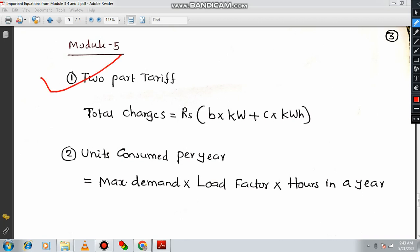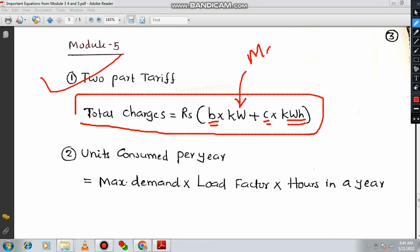Two part tariff comprises of the fixed charge as well as the running charge. Here the total tariff has been segmented into two. One is fixed part, another one is running charge. Total charge can be computed using the formula: Rupees, in terms of rupees only, whatever the currency it may be based on the country. Rupees B into KW. B means the cost per kilowatts. And C into kilowatt hour. This is actually called maximum demand. Maximum demand, which will be expressed in terms of kilowatts.